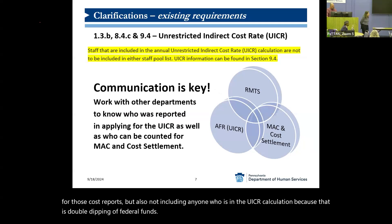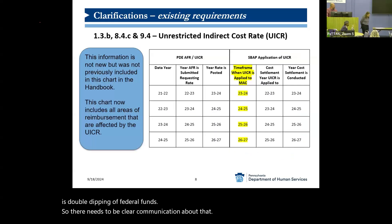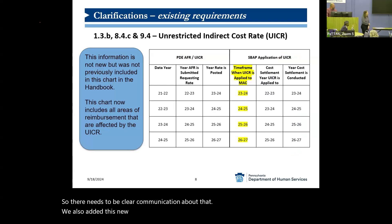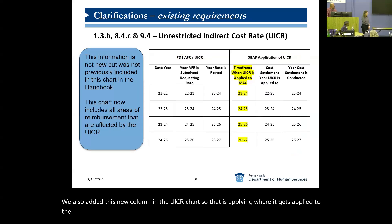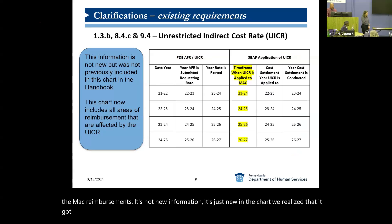You also need to make sure you're not including anyone who is in the UICR calculation, because that is double dipping of federal funds. So there needs to be clear communication about that. We also added a new column in the UICR chart — that's where it gets applied to the MAC reimbursements. It's not new information, it's just new in the chart. We realized it got left out, so we added that in.